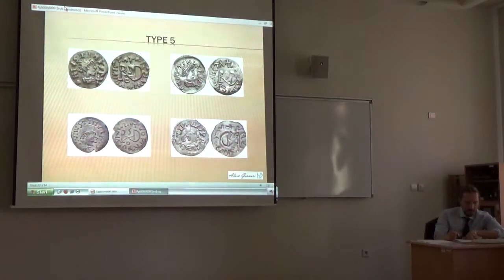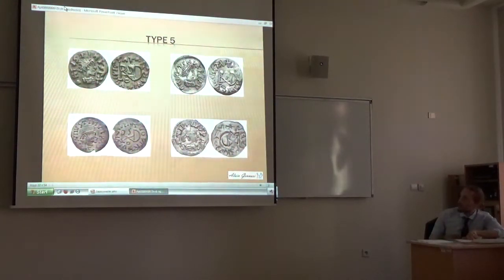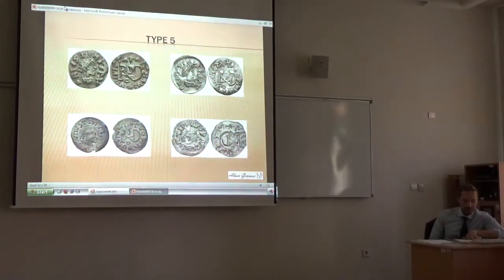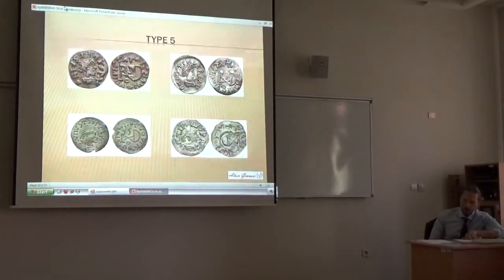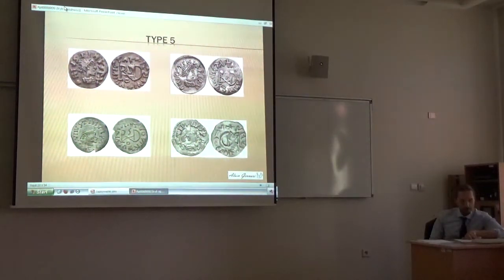Type 5 is similar to Type 2, but it is in the name of Justin I. Type 5 is the second most representative group, but it represents only more than 9% of the total database — only 47 specimens — showing on the reverse Invicta Roma with a Justinian obverse.